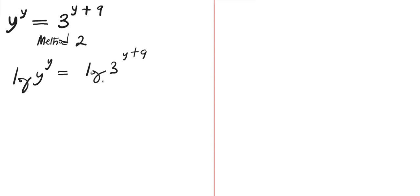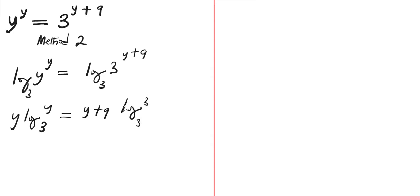So we are going to have log of y to the power of y equals to log of 3 to the power of y plus 9, with base 3 on both sides. Bringing the exponents down, we have y times log of y to base 3 equals to y plus 9 times log of 3 to base 3. Since log of 3 to base 3 is 1, we have y log of y to base 3 equals to y plus 9.